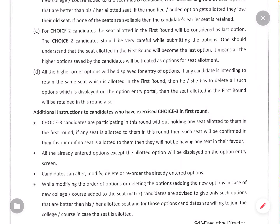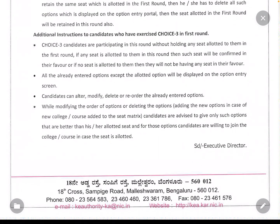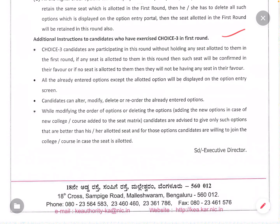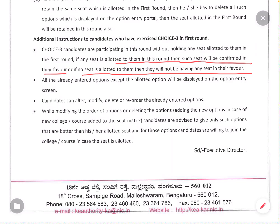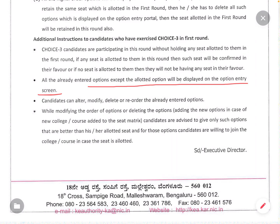Additional instructions for Choice 3 candidates who exercised Choice 3 in the first round: these candidates are participating in this round without holding any seat allotted in the first round. If any seat is allotted to them in this round, such seat will be confirmed in their favor. If no seat is allotted, they will not be having any seat. The allotted seat will be displayed on the option entry screen. Candidates can alter, modify, delete, and re-order the already entered options.